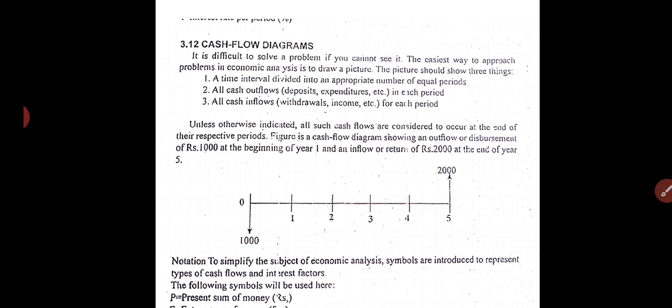If you see this figure, a cash flow diagram showing an outflow or disbursement of 1,000 rupees at the beginning of year one, and an inflow of 2,000 rupees at the end of five years. So you are investing 1,000 rupees, and after five years you are getting 2,000 rupees at one instance only.